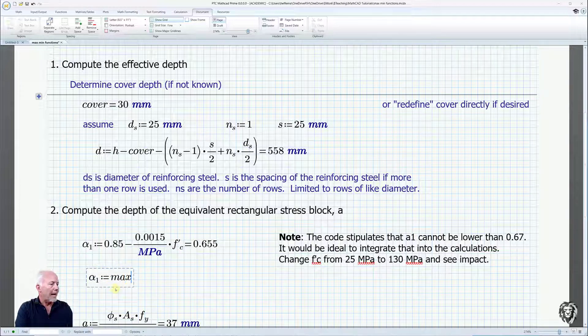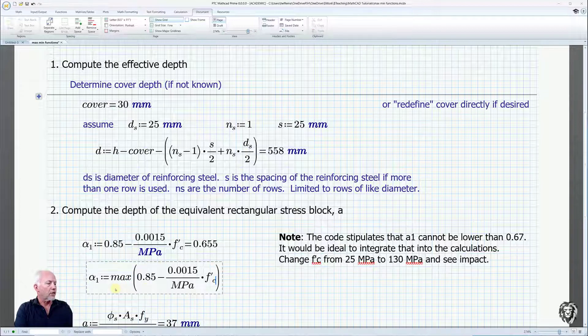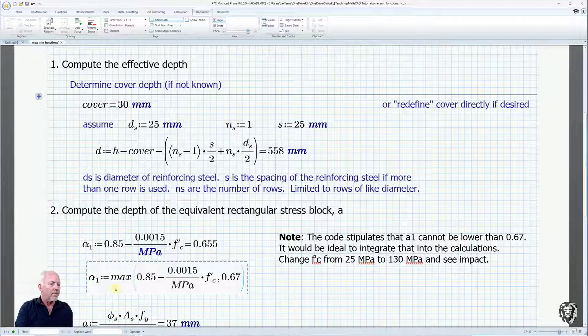I'm going to go maximum of, create the brackets. The first term will be that. Then I'll do a comma and I will put in the 0.67 identified in the code. And then I can hit my equal sign.